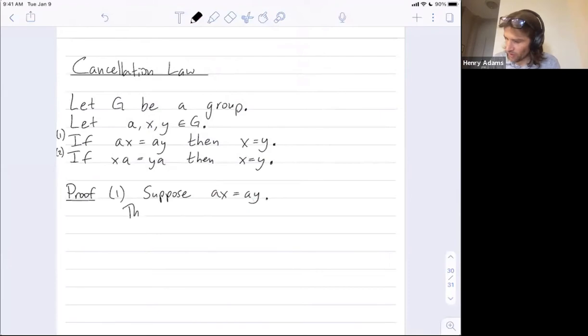So we're going to multiply both sides by a inverse on the left. So these two things are equal, ax and ay are equal. So if I do the same thing to one side, I still get the same answer as if I do that same thing to the other side. So here, what I'm doing to both sides is I'm multiplying by a inverse. And yeah, a inverse times ax is certainly the same as a inverse times ay, just because ax and ay are the same. So if I do identical operations to the same thing, I get the same thing.